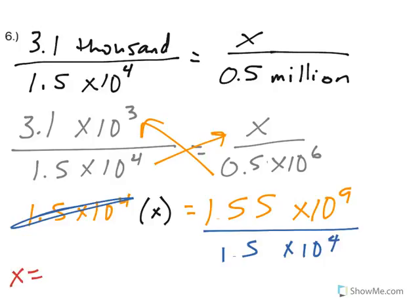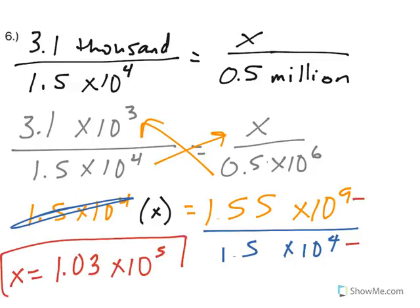So I now have x equals, when I take 1.55 divided by 1.5, I get approximately 1.03 times 10 to the 9 minus 4 is 5. And that is scientific notation, so I can go ahead and quit there.